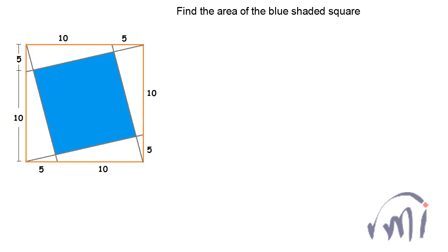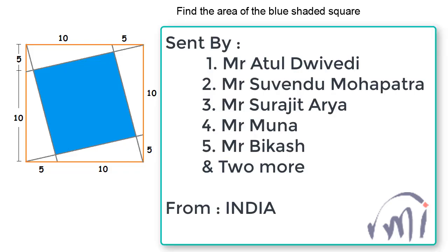Here we have a question which was asked by seven people from India. I couldn't get two of their names, and five of them are Atul Vivedi, Subhindu Mahapatra, Surajit Arya, Mr. Muna and Bikash.